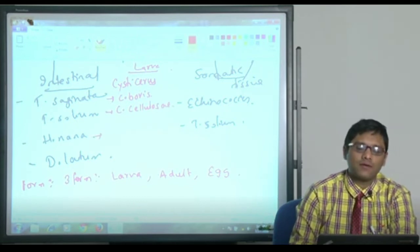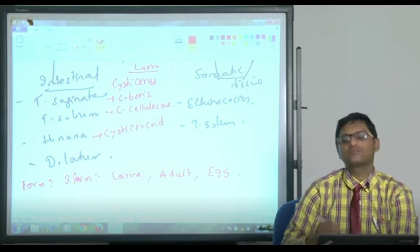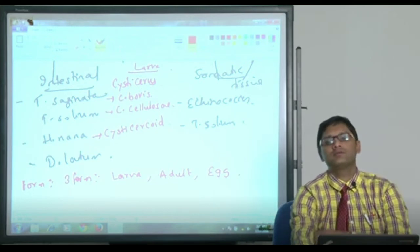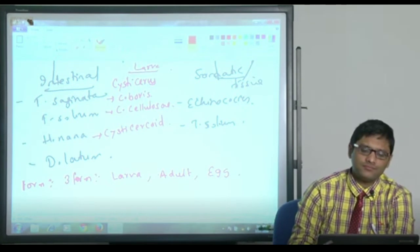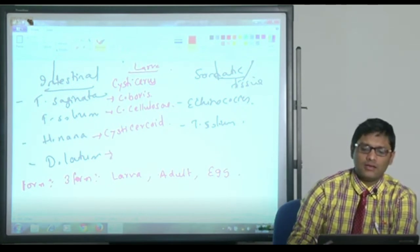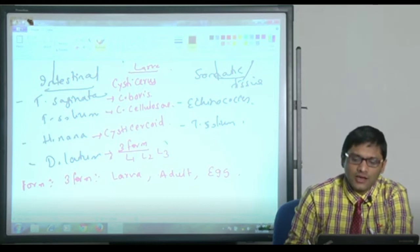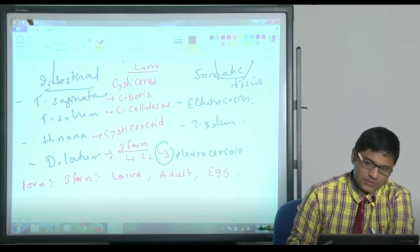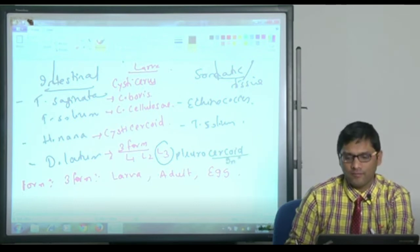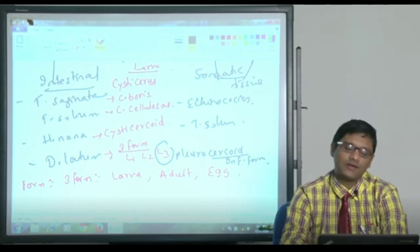Hymenolepis nana, the larval form is called as Cysticercoid. D. latum has three larval forms: L1, L2, and L3. Among this, L3, which is the pleurocercoid form, this is the infective form.